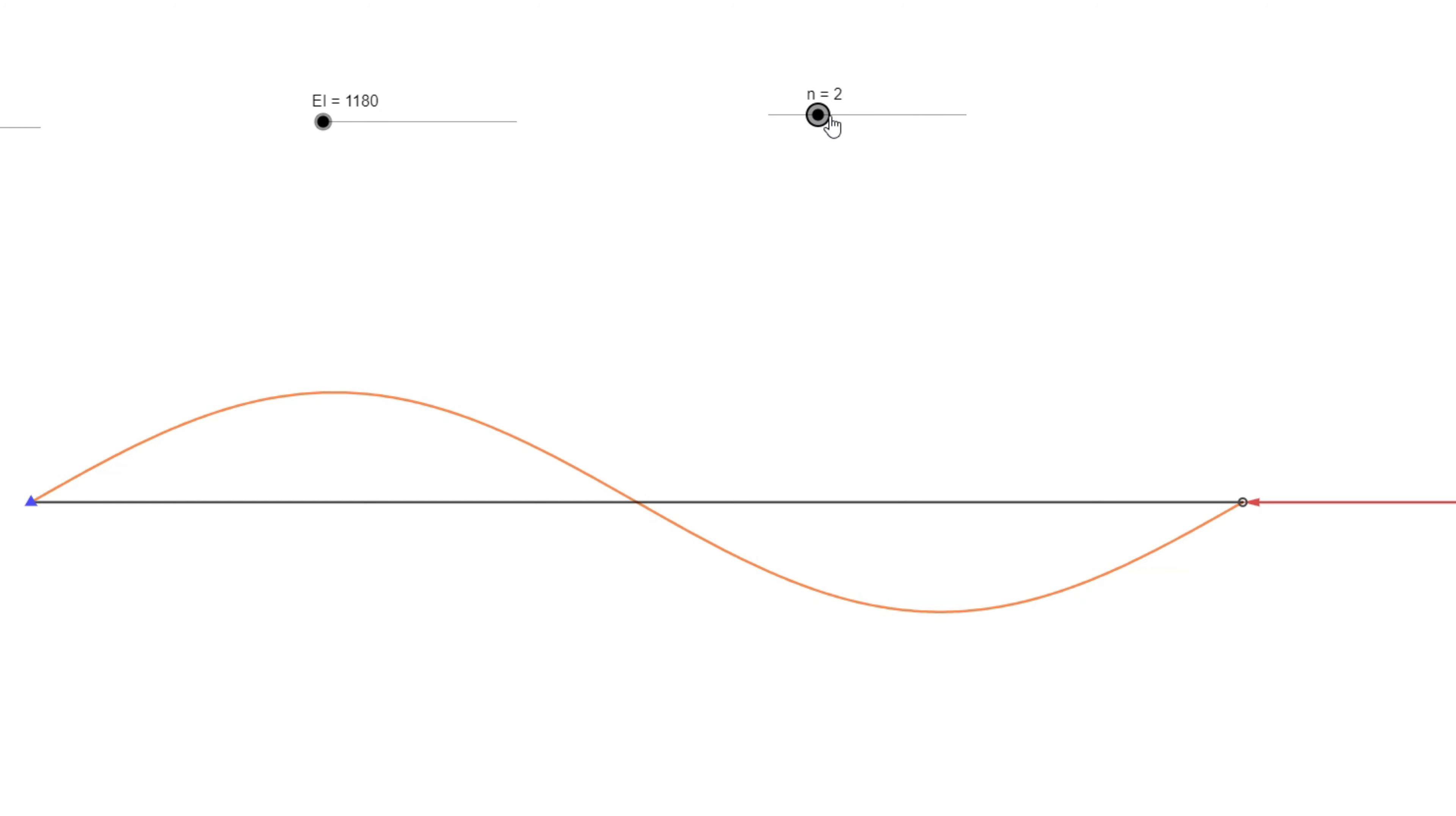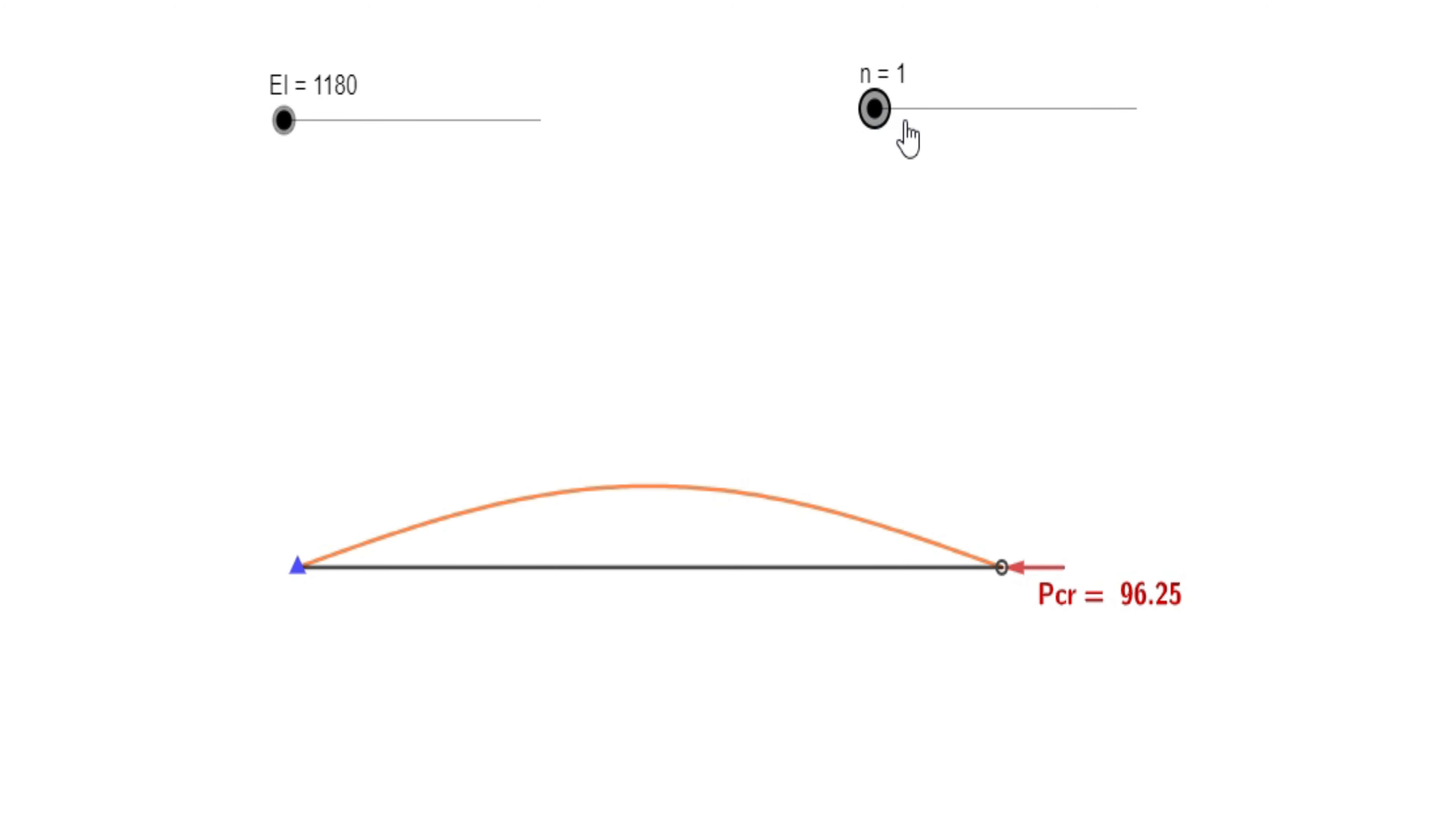N, however, have a very interesting meaning. We can see that if N equals 2, the shape of the deflected beam is different. But this physically means that the beam is prevented from deflecting in the middle by laterally supporting it.